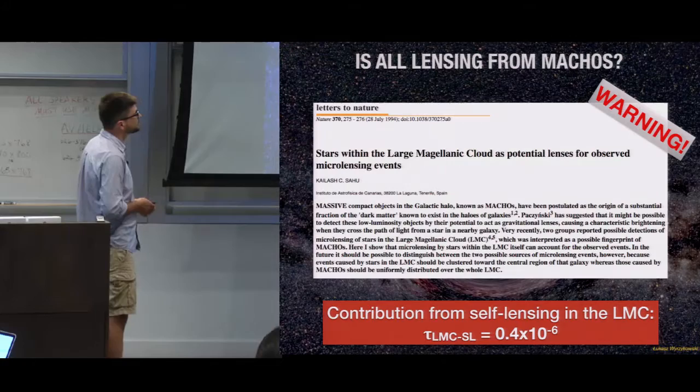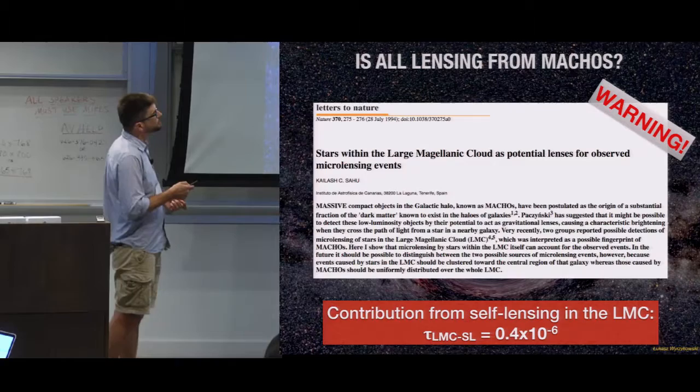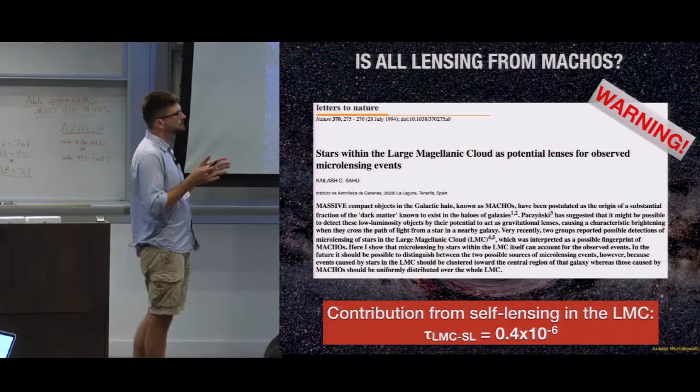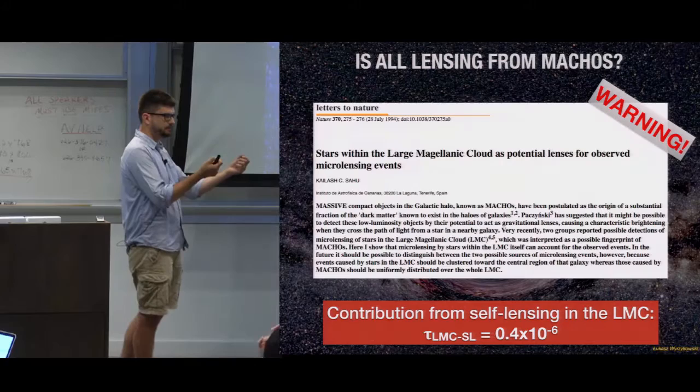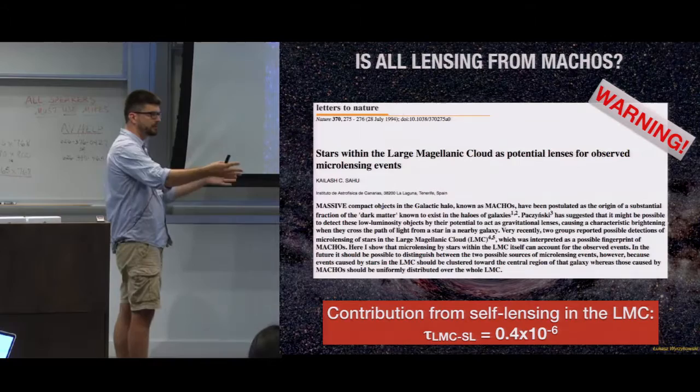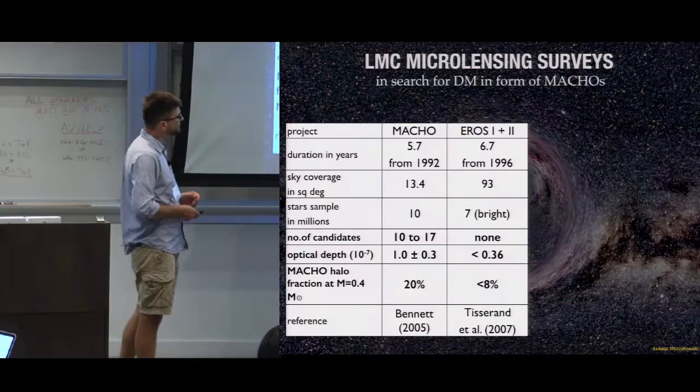But there is a warning. Actually, soon after all the microlensing surveys started, Kailash Sahu, present here, he published a letter to Nature saying that stars within the Large Magellanic Cloud, they could be potential lenses for observed microlensing events. Kailash has computed that at least a fraction of microlensing events towards the LMC should be due to stars of LMC lensing stars of LMC. So LMC has some depth, and you expect that some stars from the front will lens the stars from the back. The contribution from so-called self-lensing in the LMC would be of order 0.4 times 10 to the minus 6.